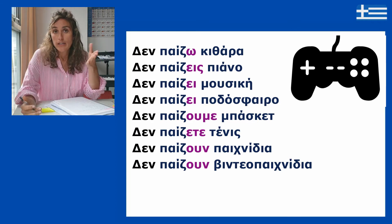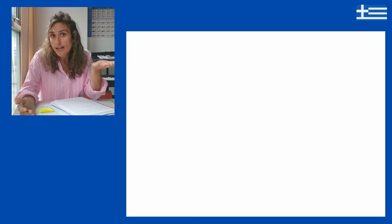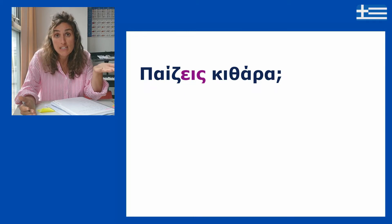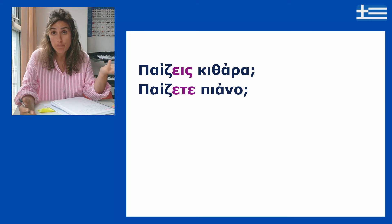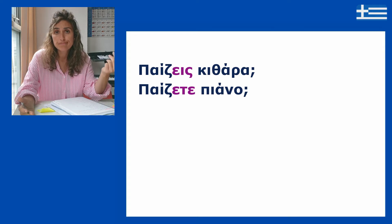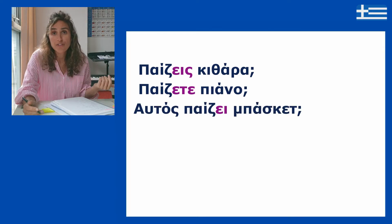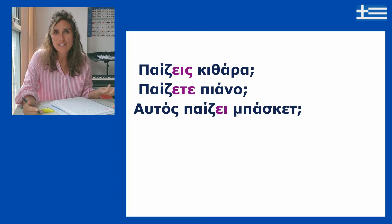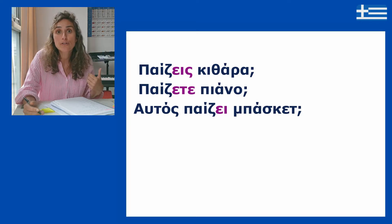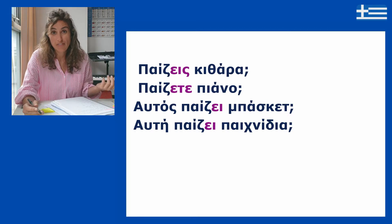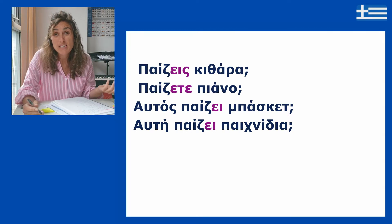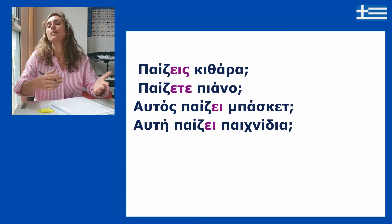The negative form uses δεν. If you want to ask a question, you would say: Παίζεις κιθάρα; Παίζετε πιάνο; Αυτός παίζει μπάσκετ; Αυτός παίζει παιχνίδια; That's the way you could ask.